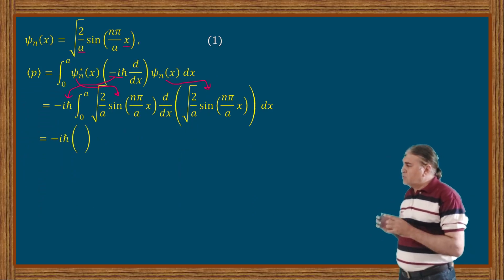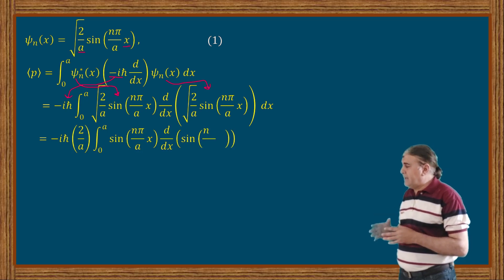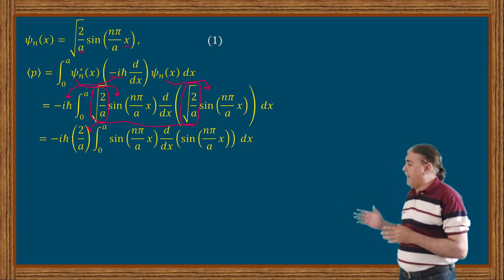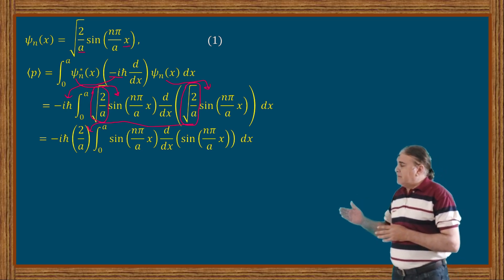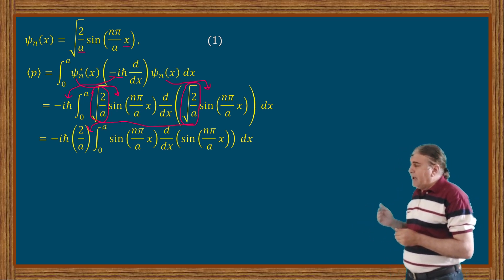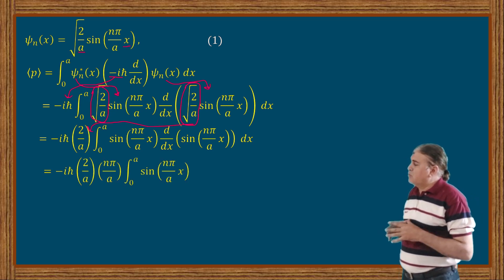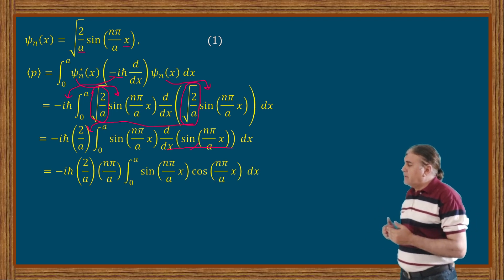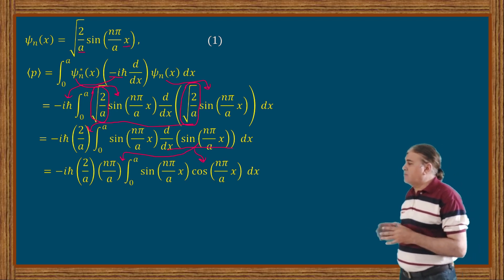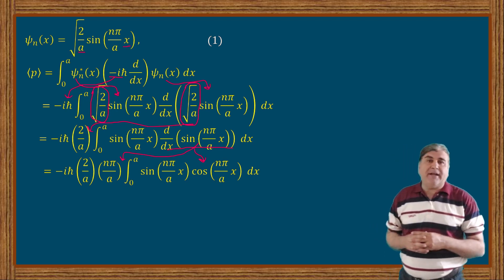I combine the two terms containing the square root of 2 divided by a and take that out of the integral, writing it as 2 divided by a to the left. Then applying the derivative with respect to position to the sine function converts it into a cosine function and extracts N pi divided by a from the argument of the sine function, which I write to the left inside the brackets.